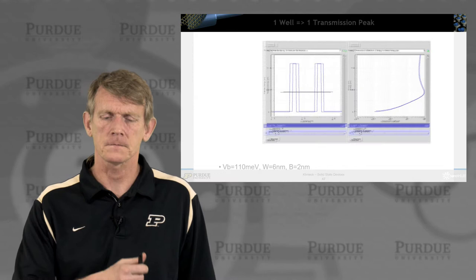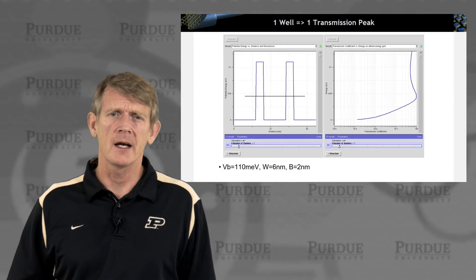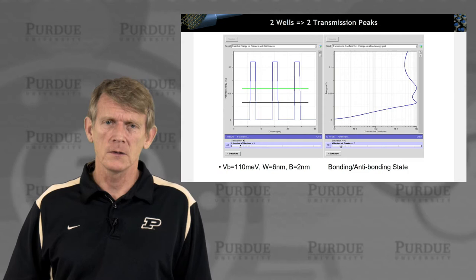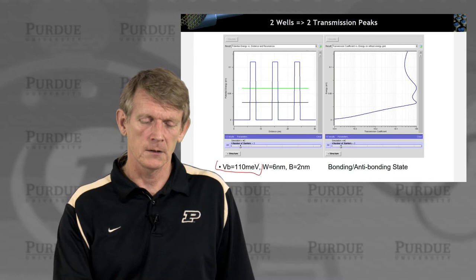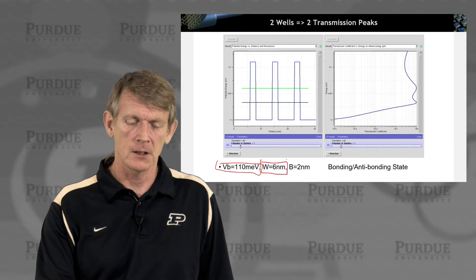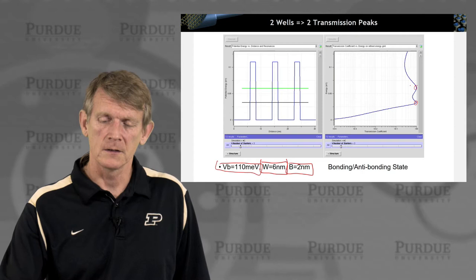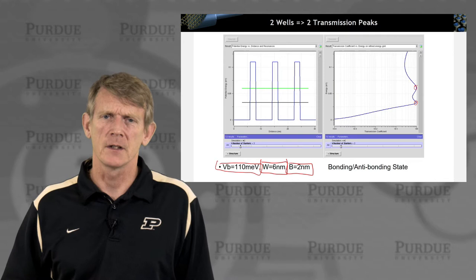Going back to the case of a double barrier structure, we had effectively one well and one transmission peak for one resonance in the system. Now, if we go in the tool and increase the barrier numbers from 2 to 3 — choosing a barrier height of 110 meV, a well of 6 nm, and a barrier of 2 nm — we find two resonances that show perfect transmission of 1 under the barrier. That resembles bonding and anti-bonding states from chemistry.